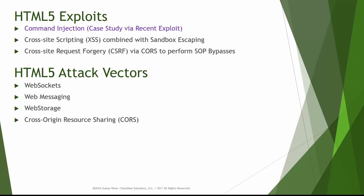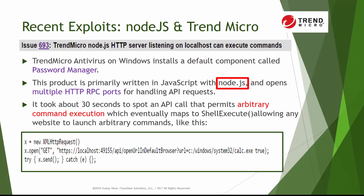Now we'll get into the exploits. There are three HTML5 exploits to go through, after which the different HTML5 attack vectors will be explained. First: command injection — specifically in regards to a recent exploit. Just recently, at the beginning of January 2016, Trend Micro — a company providing antivirus solutions and firewalls — had an exploit done against Node.js. The issue, recorded as number 693, was: Trend Micro Node.js HTTP server listening on localhost can execute commands.